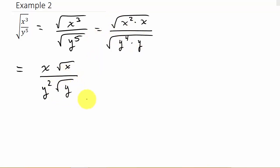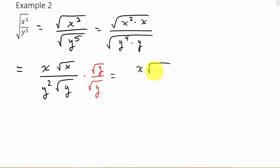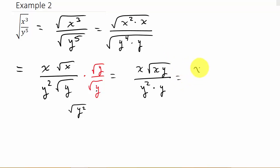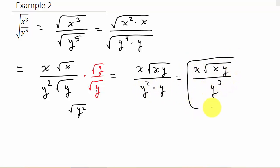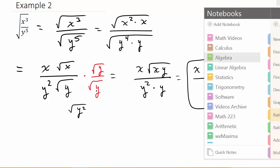I just need to get the radical out of the denominator. What can I multiply by y to get a perfect square? Well y times y is y squared, and 2 will go into 2 evenly. So rationalizing the denominator, I multiply numerator and denominator by the square root of y over the square root of y. This gives me x square root of xy over y squared. The square root of y times square root of y is the square root of y squared, which is y. So the answer is x square root of xy over y cubed.